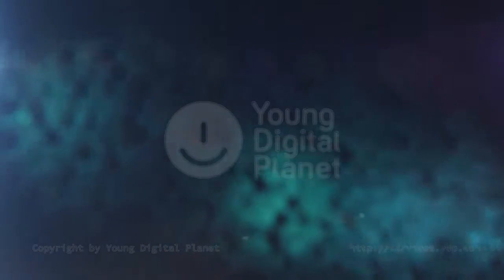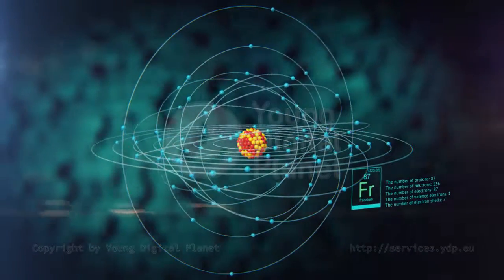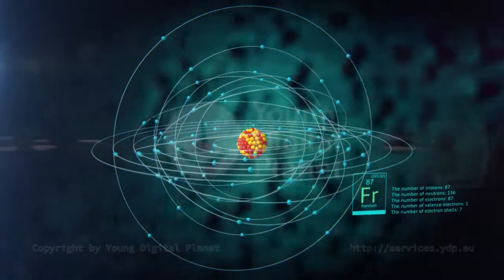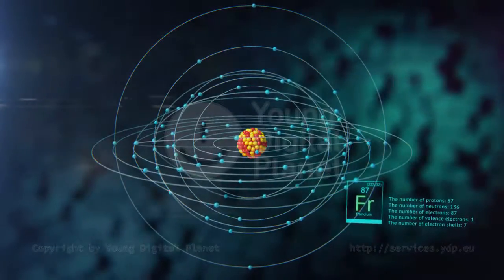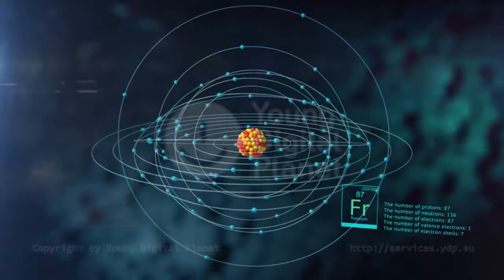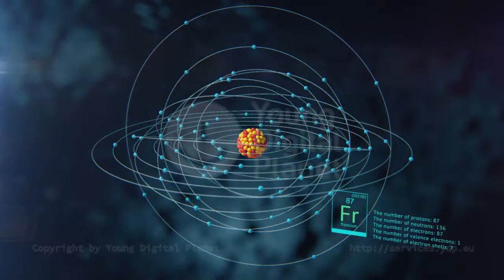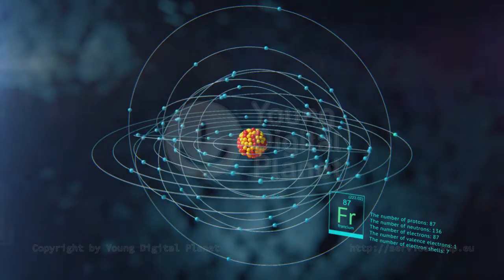The francium atom is the largest in group one. Its nucleus consists of eighty-seven protons and one hundred thirty-six neutrons. The nucleus is orbited by eighty-seven electrons on seven electron shells. Francium, like all alkali metals, has one valence electron.